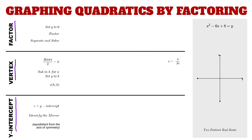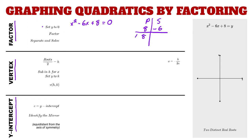Our first example is x squared minus 6x plus 8. The first step is to set y to zero, which allows us to find the two x-intercepts. We use product and sum — a product of 8 and a sum of negative 6. Eight factors to one and eight, and two and four; we'll use two and four, so this becomes (x minus 2)(x minus 4) equals zero.